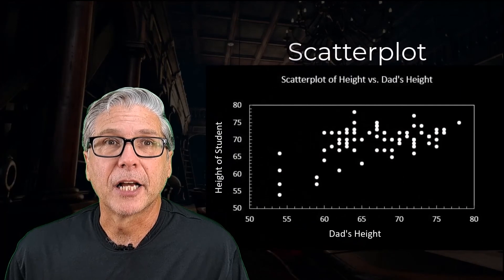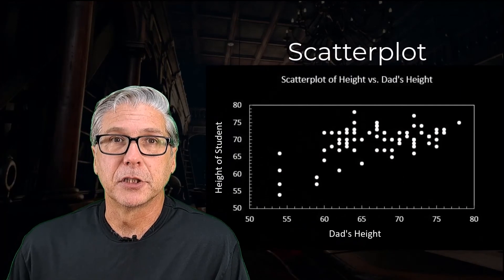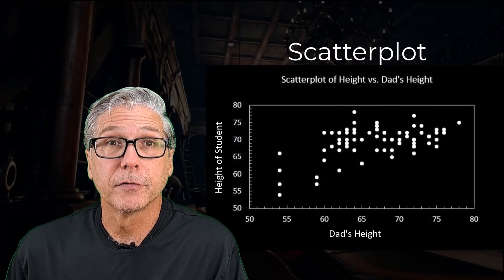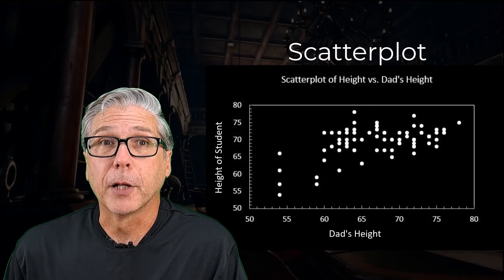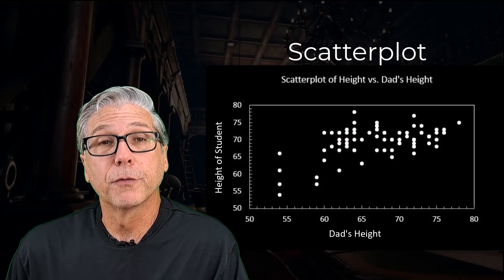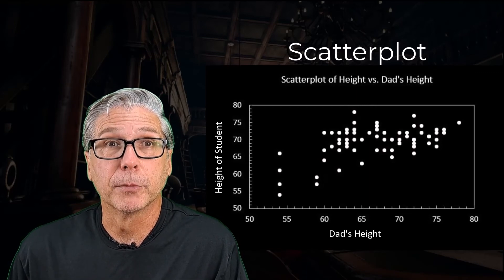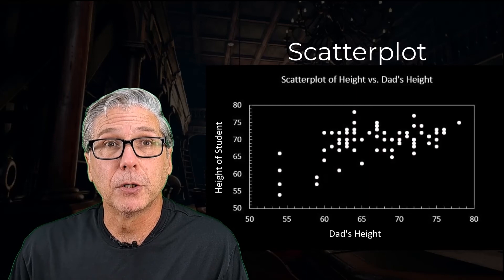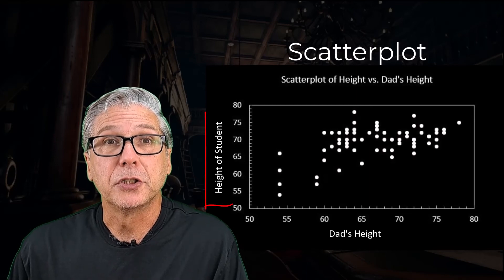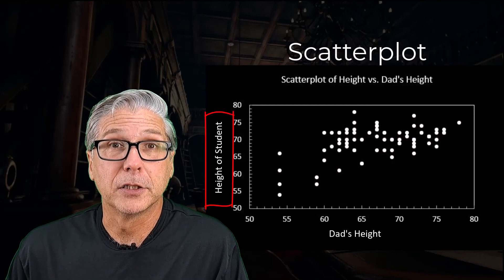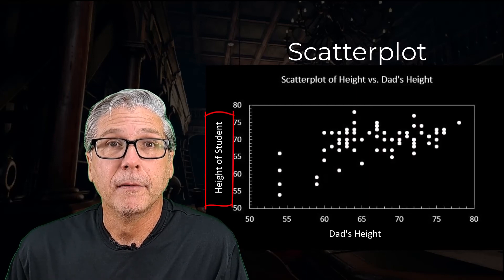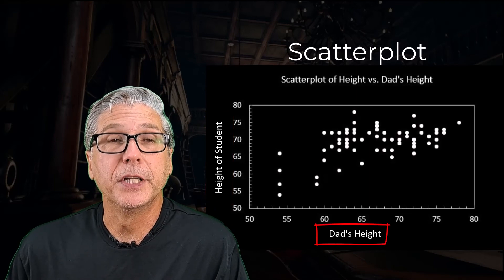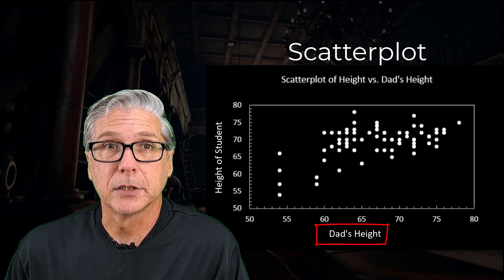Lastly, a scatter plot allows us to plot two variables at the same time on a graph. Scatter plots can be used to look for relationships between two variables. In the example shown, a student's height is shown on the y-axis of the plot and their father's height is shown on the x-axis.